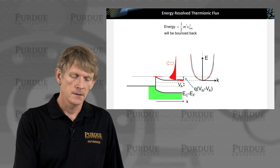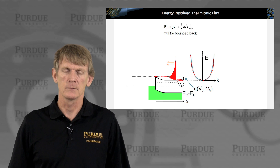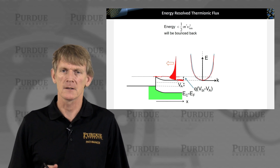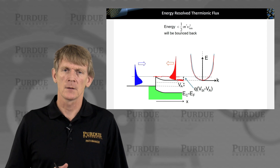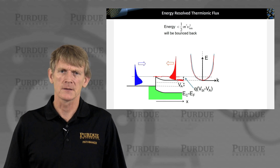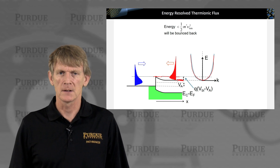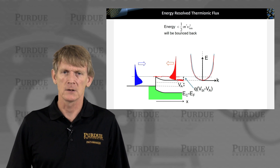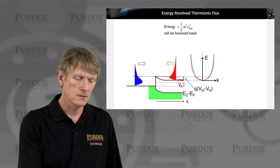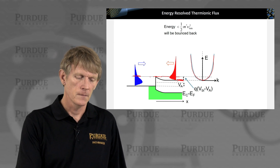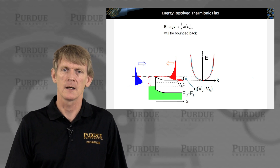Only the electrons that are above this barrier tip can make it through thermionic emission. The same is true on the metal side — on the metal side we have a similar picture, except the density of states is much larger as we discussed. And also here we assume that only the carriers that are above this barrier here can make it through to the N side.